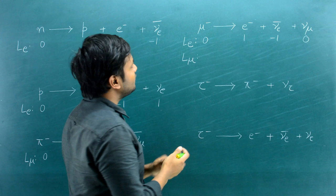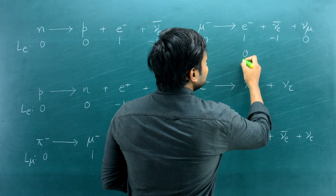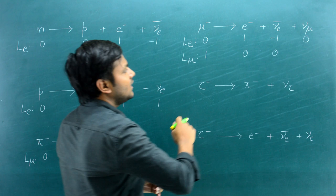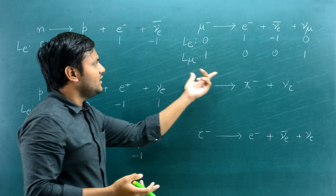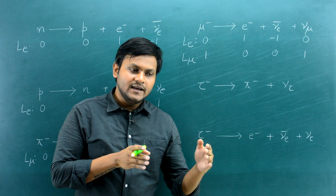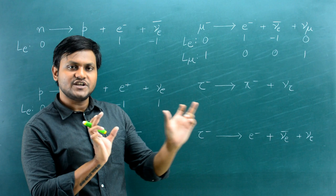These quantum numbers are additive — you add them on the right-hand side as well as the left-hand side and check for their conservation. Once you understand the electron, muon, and tau lepton numbers, you get an idea about what sorts of interactions are possible and what sorts are not possible.